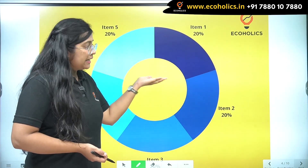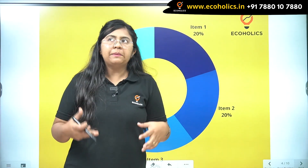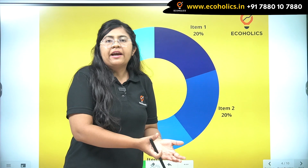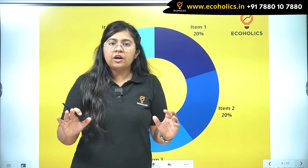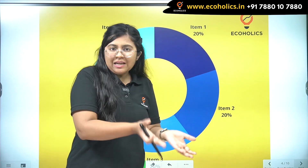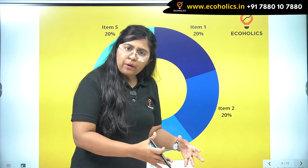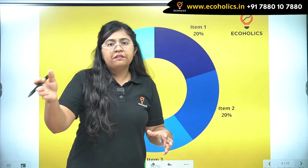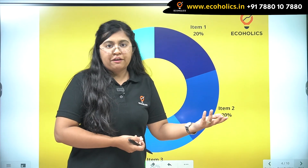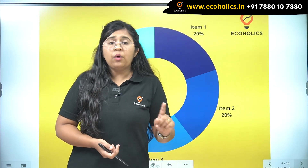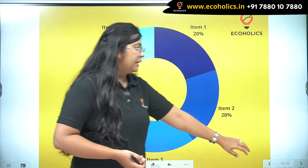Now you might wonder: what is the difference between a pie chart and a donut chart if both represent sections? A pie chart looks into one company, one student, or a specific population and its different aspects. However, a donut chart has a special capability that sets it apart.